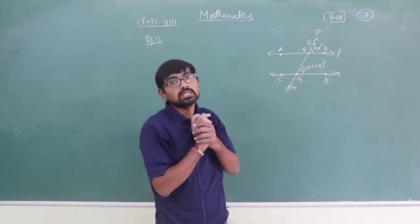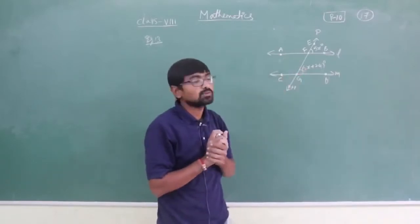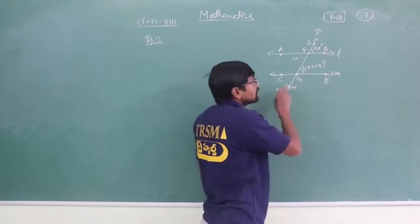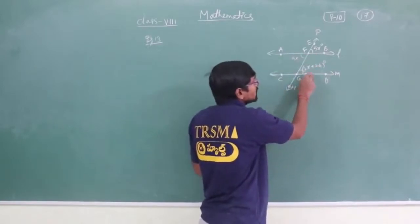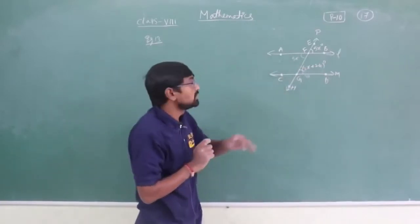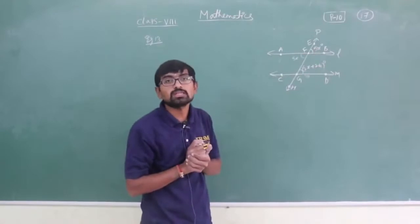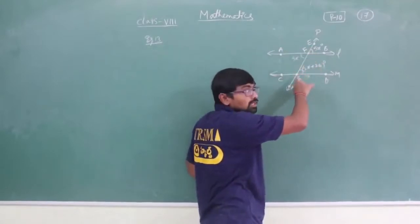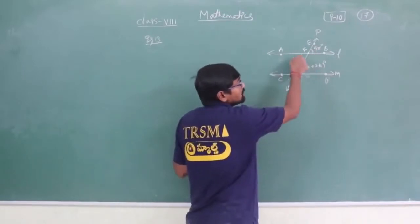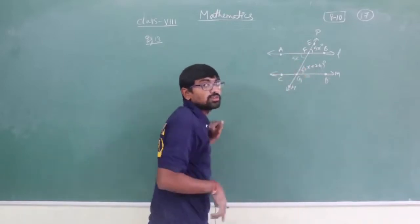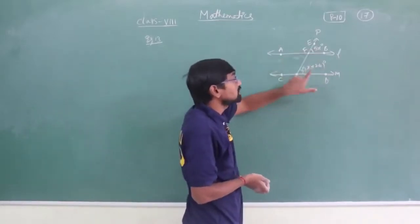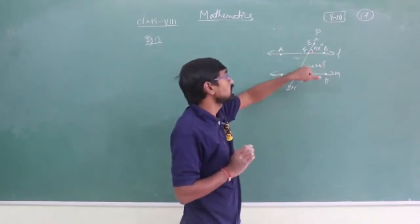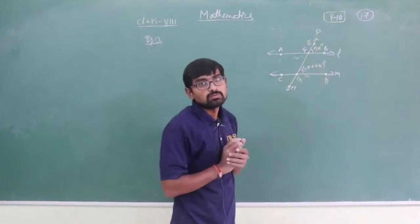What he asked is to find the angle x, the value of x. You already know about this — if this is 5x, the corresponding angle is also 5x. These are called corresponding angles. Corresponding angles are equal when two parallel lines are cut by a transversal. So these two angle values are equal.